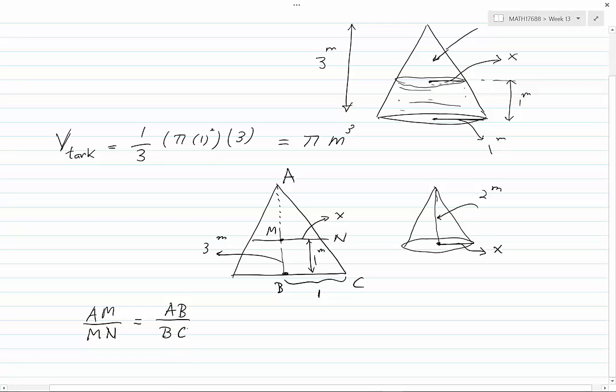AM is equal to 2 meters, the total height which is 3 minus the height of water which is 1. Therefore we have 2 divided by MN, which is our unknown, equal to AB which is 3 divided by BC which is 1. If we cross multiply this equation, we have 1 times 2 is 3 times x, and we can solve this for x to get x is equal to 2 over 3.